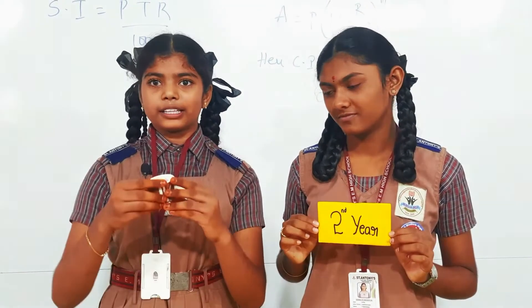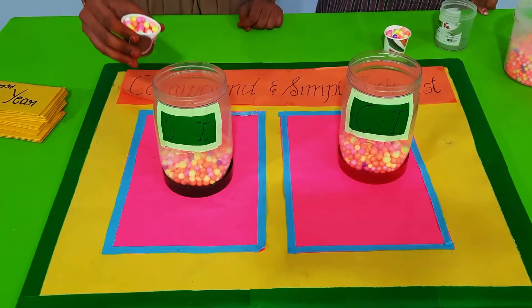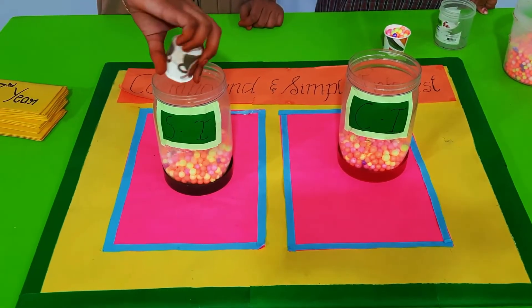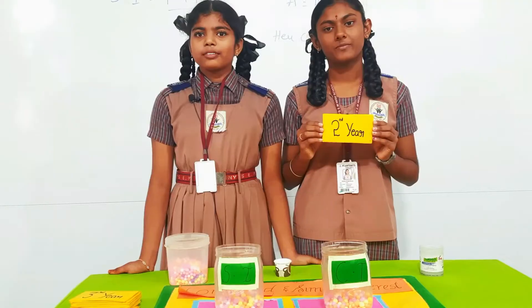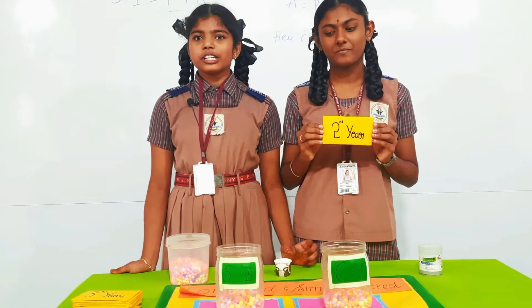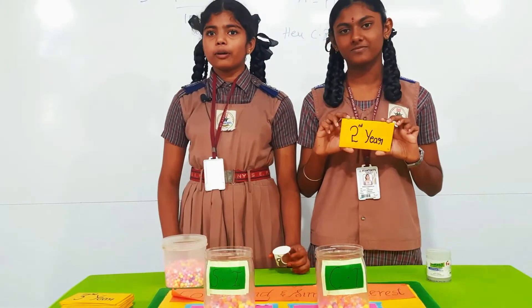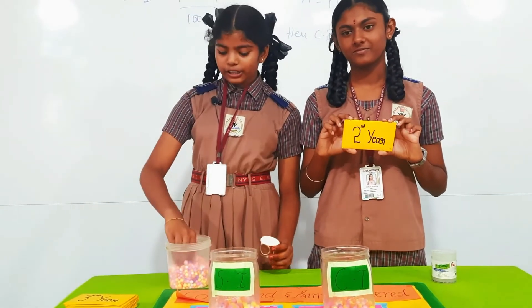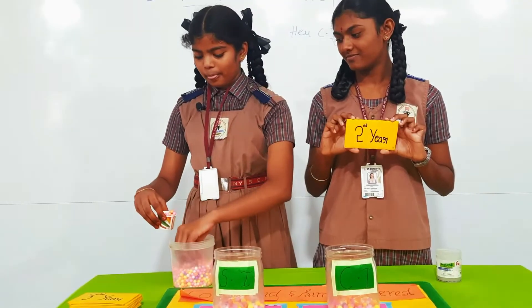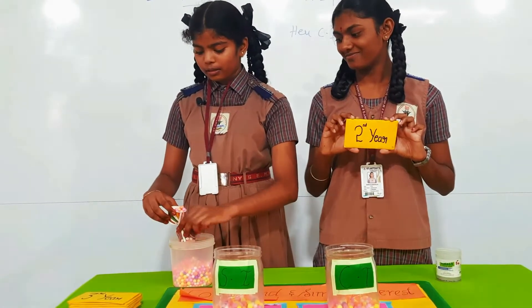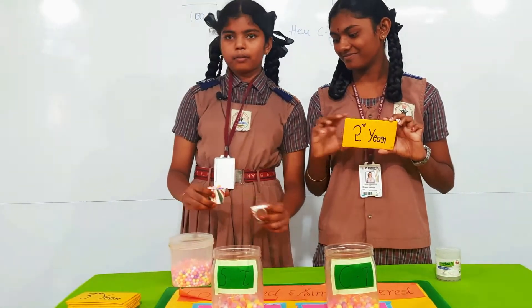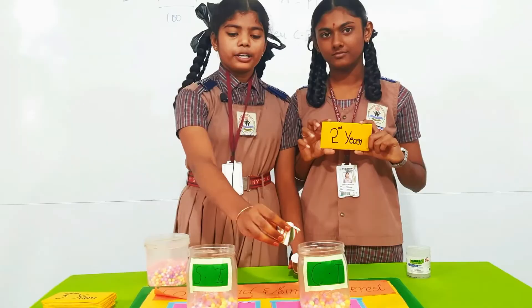Now it is the second year. As I said earlier, simple interest is constant for every year, so I am taking the same cup. For the second year, the principal was changed in the compound interest, so I am taking a 1 and 1/4 cup of interest. I am putting the interest in the compound interest jar.